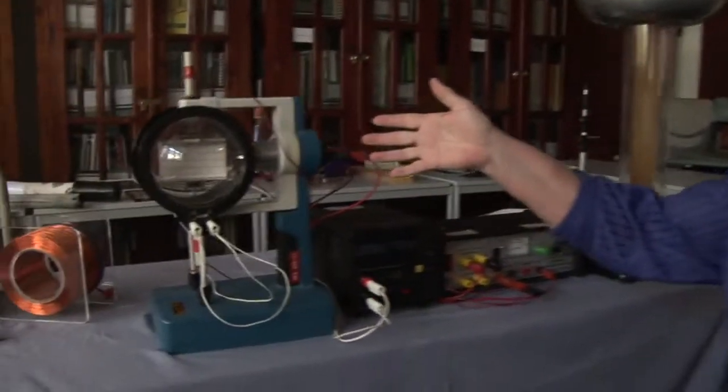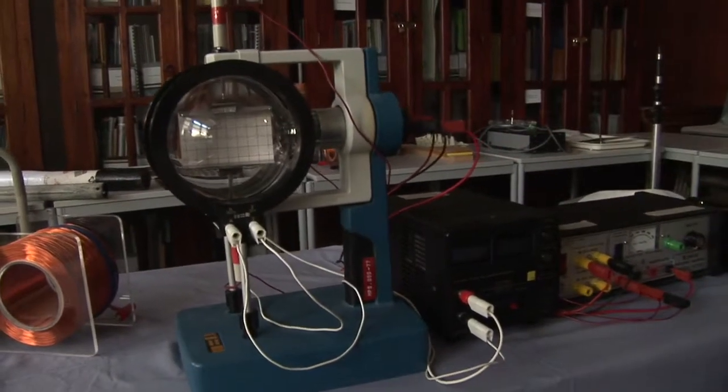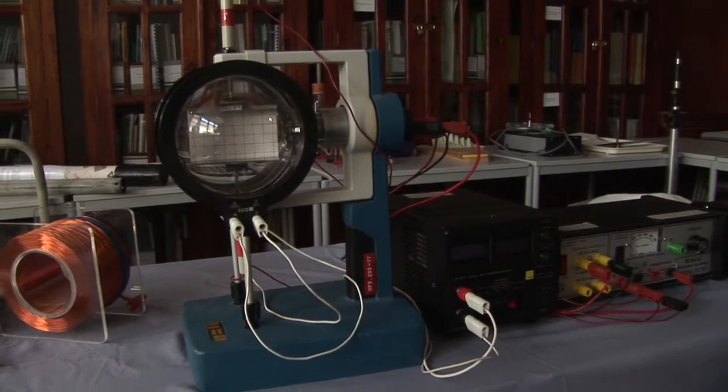This is Thomson's apparatus. It's a historical experiment and it demonstrates the interaction between electric and magnetic fields, or electricity and magnetic fields.